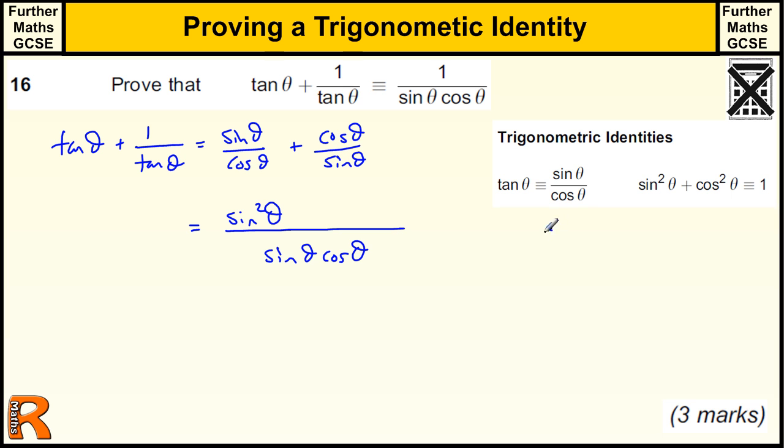Now we write that as a little 2 there. That means the same as - I'm not sure if you're used to this notation, but sin θ squared can be written more simply with a little 2 there. That's what that means.